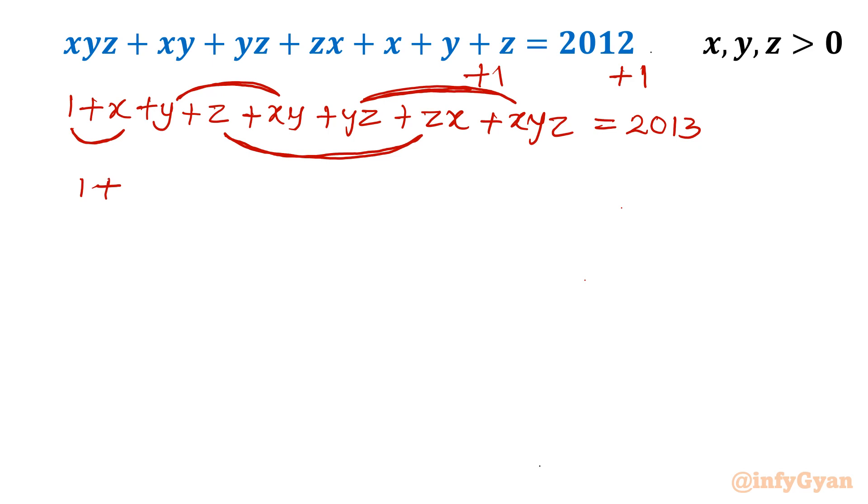1 plus x from first two. Now y and xy, I am going to take y common. So I will be having 1 plus x inside the bracket. Similarly z common from third and sixth term, I will get 1 plus x again. Now what is left? yz and xyz. I will take yz common.